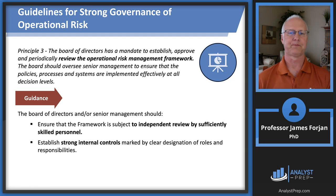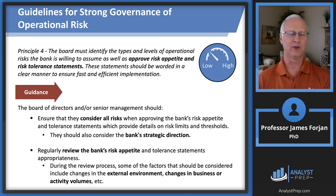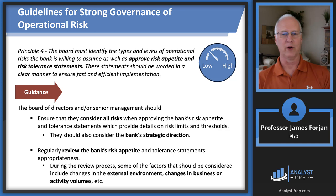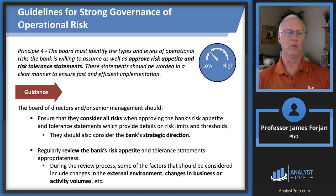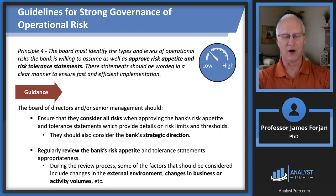Principle 4: the board must approve risk appetite and risk tolerance statements — essentially this much or this much. The guidance says ensure we're considering all the risks when approving a bank's risk appetite. These operational risks have to fit into the bank strategy, and of course we need to regularly review them. We learned in 2020 that a virus can suddenly alter the entire business model for our financial institution, along with all our loan customers' models — so we need to review and review and review.